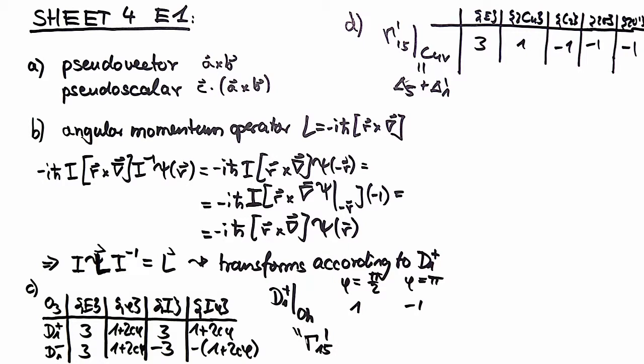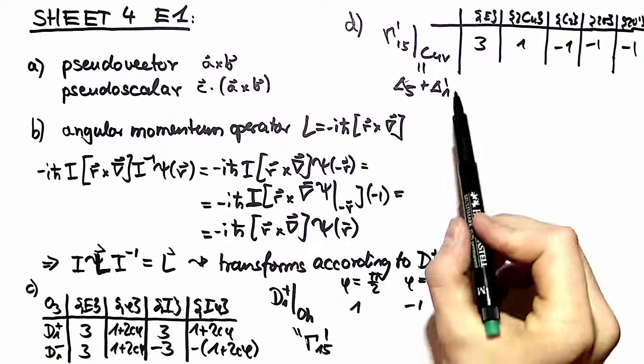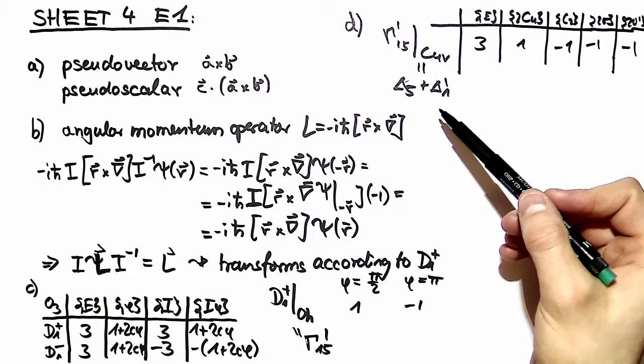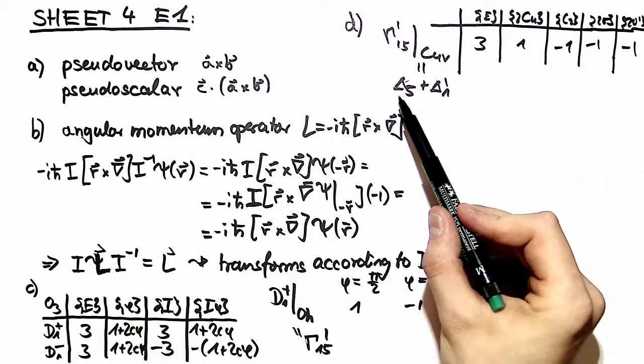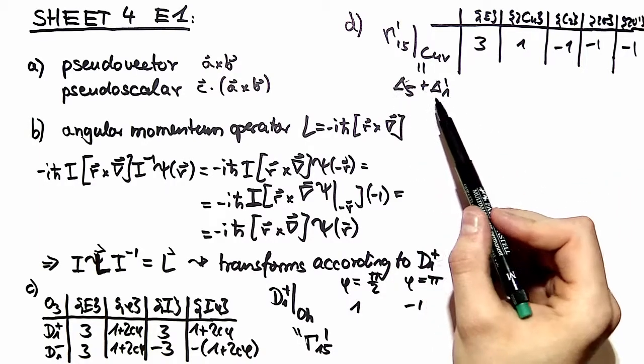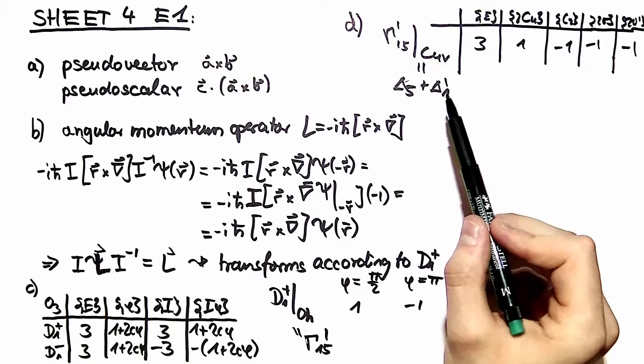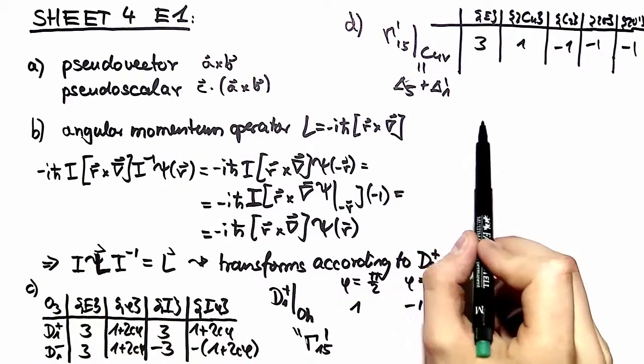All you need is to find another irreducible representation of C4v which transforms according to a pseudovector, and this is the delta 1 prime representation. So yes, it makes sense. Lx and ly reside in delta 5, and lz resides in delta 1 prime. Thank you for watching. I hope you enjoyed it. See you next time.